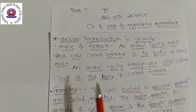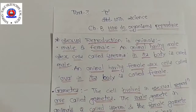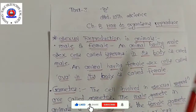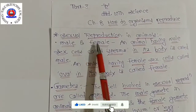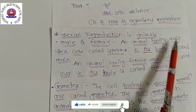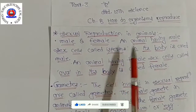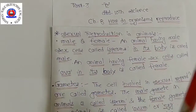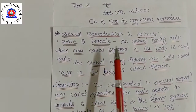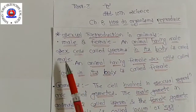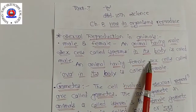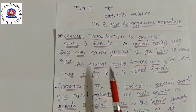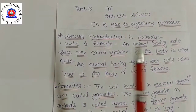In order to understand sexual reproduction, we should know the meaning of some important terms: male sex, female sex, gametes, sperm, ova, fertilization, zygote, and embryo. An animal having male sex cells called sperm in its body is called the male. An animal having female sex cells called ova in its body is called the female.